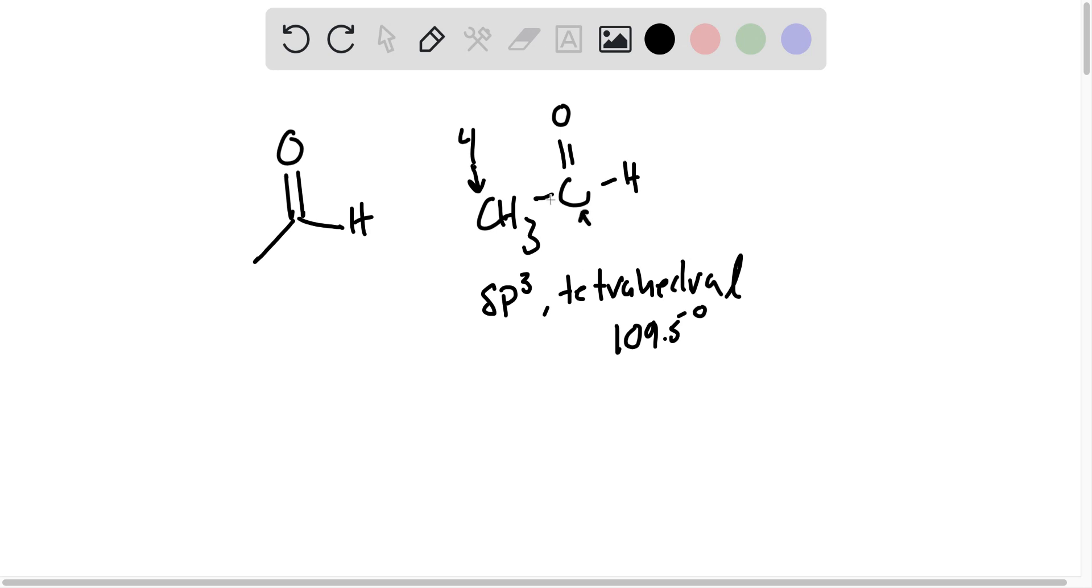Now let's look at this carbon. This carbon has one, two, three bonds. One of them is double bond, but it has three electron regions. Carbon with three electron regions is sp2 hybridized, and it is trigonal planar. That also tells us that the bond angles are like a peace sign, 120 degrees.